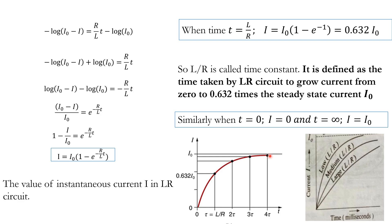The time constant L/R determines the growth rate of the LR circuit. Suppose the time constant L/R equals 10 minutes — the current grows slowly to reach I₀. If L/R is small, the circuit grows fast to the maximum current; if L/R is large, it grows slowly. Every time interval equal to the time constant, the current increases by 63.2% of the remaining gap.